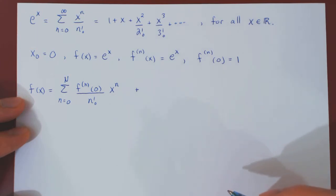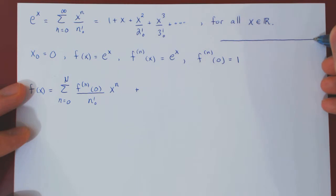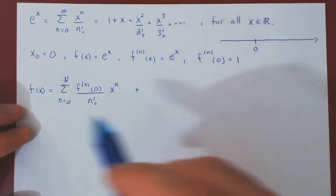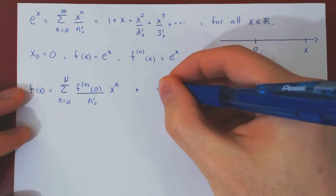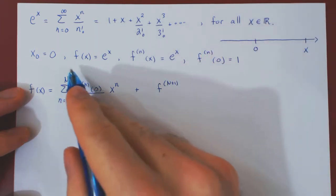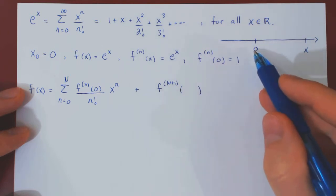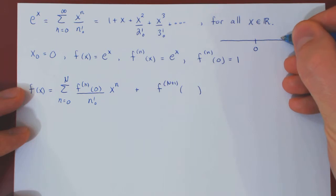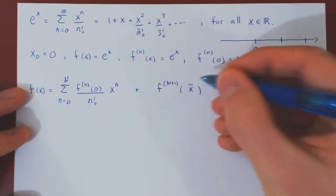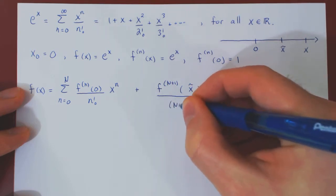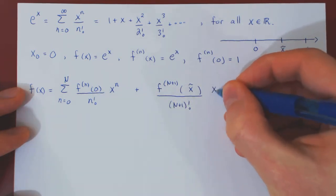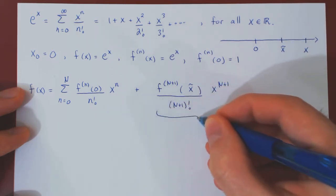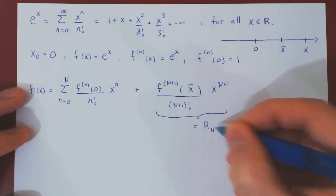We can visualize this on the real line. x0 is the center of the expansion, and we will assume that x is positive — if x were negative, the argument would be exactly the same. The remainder is of the form the n+1 derivative — the first omitted term — at some point between the center of the expansion and the chosen value of x, which we call x hat, over n+1 factorial, times x to the n+1. This is what we call Rn, the remainder term as a function of n.